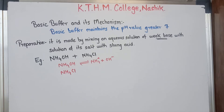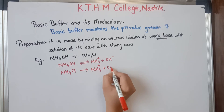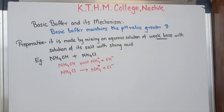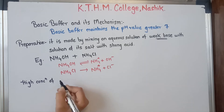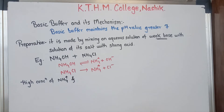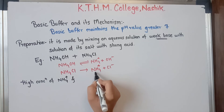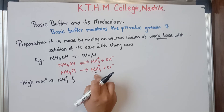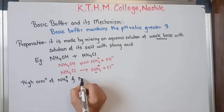NH4Cl is a salt of weak base and strong acid. A salt is an example of a strong electrolyte, which means it gets completely dissociated into NH4+ plus Cl-. So in our solution there is a high concentration of NH4+ ions.